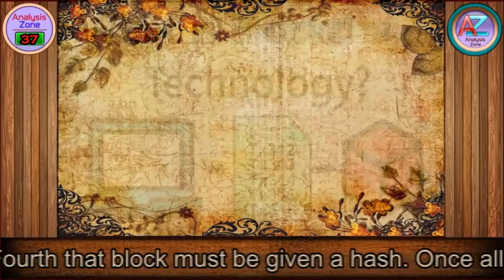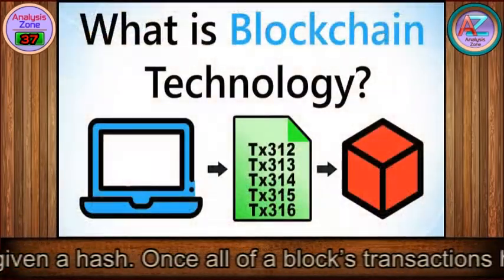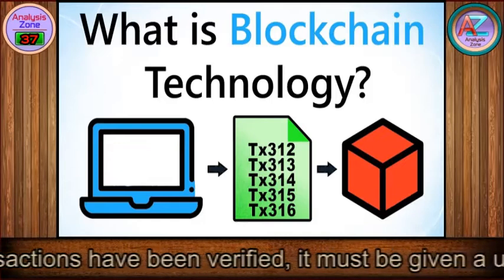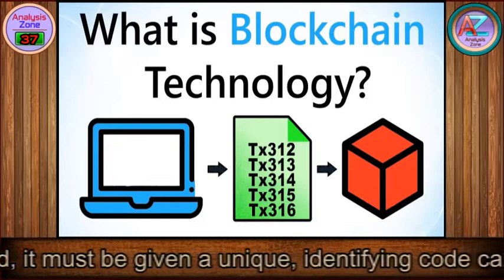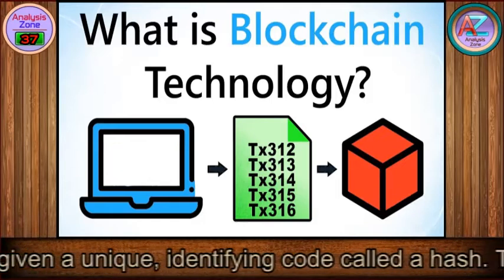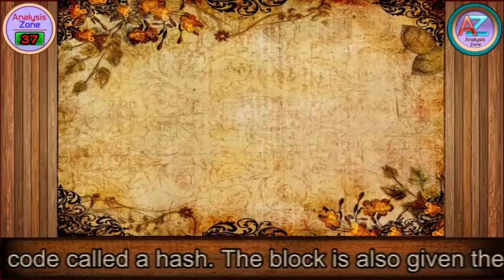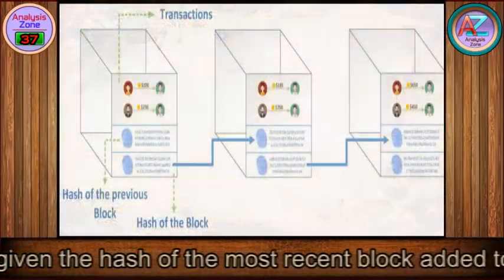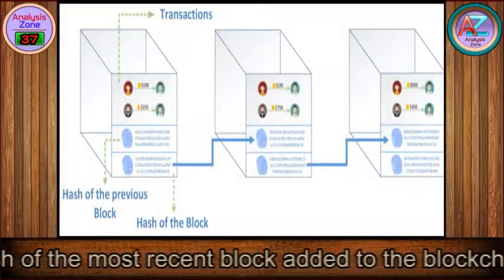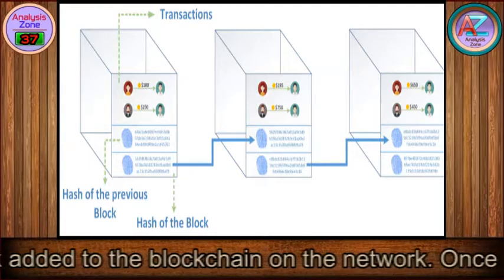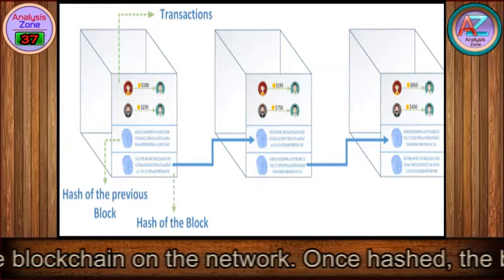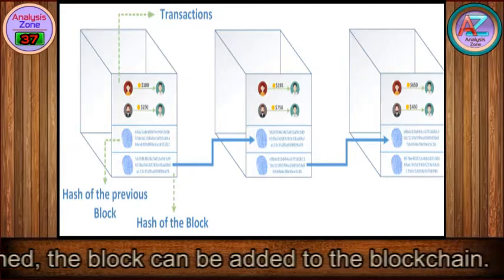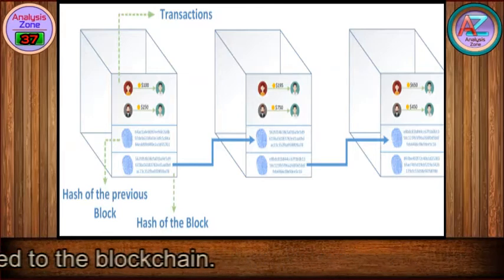Fourth, that block must be given a hash. Once all of a block's transactions have been verified, it must be given a unique, identifying code called a hash. The block is also given the hash of the most recent block added to the blockchain on the network. Once hashed, the block can be added to the blockchain.